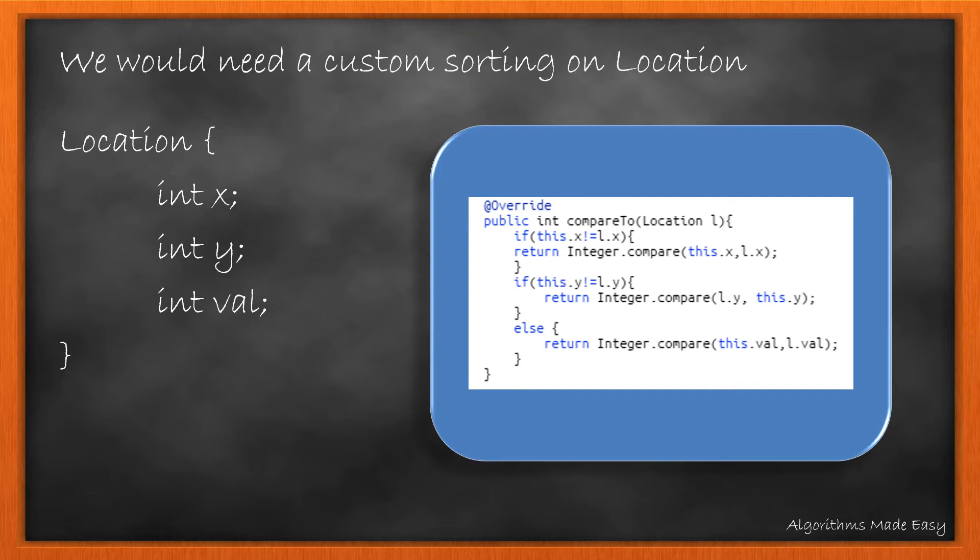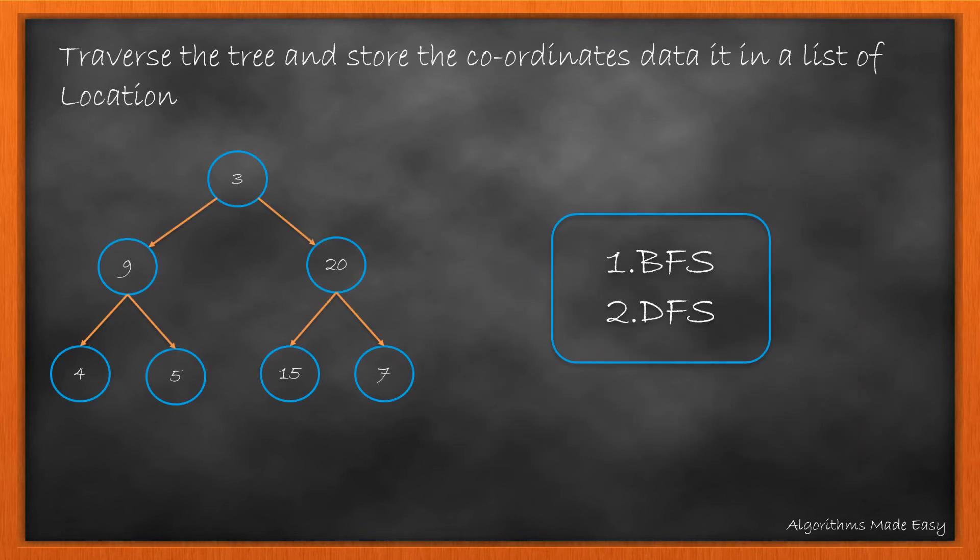The implementation of the comparable interface will look like this. In this, we have overridden the compareTo method to sort the data primarily based on x in ascending order, then on y in ascending order and lastly on value in ascending order.